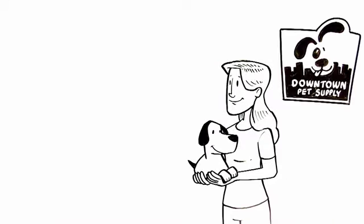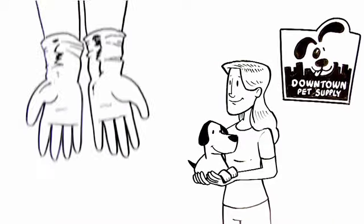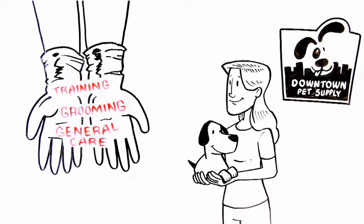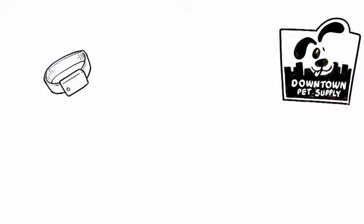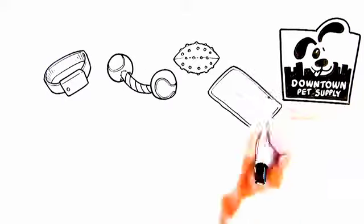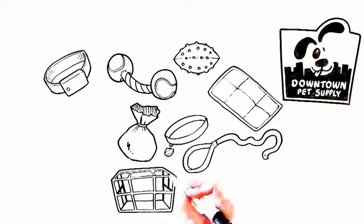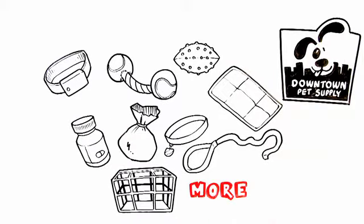Downtown Pet Supply offers a full range of nose-to-tail items for training, grooming, and general care. Like no jump harness, no bark training collars, puppy pads, pet waste bags, collars, leashes, crates, and essential vitamins and supplements.